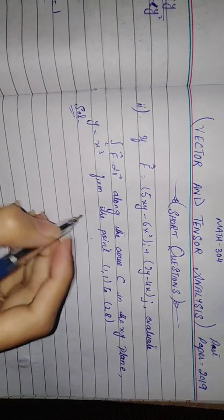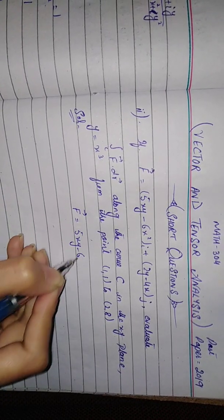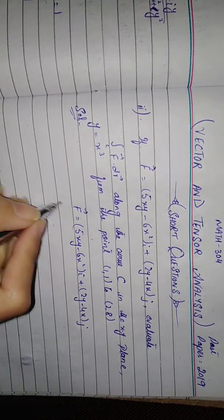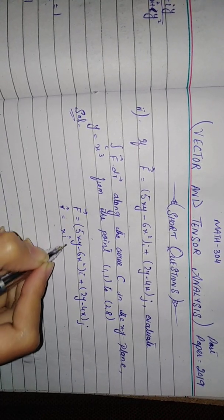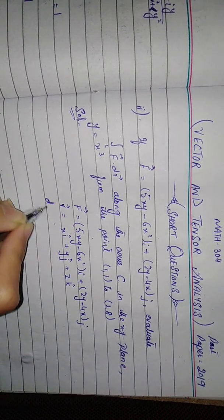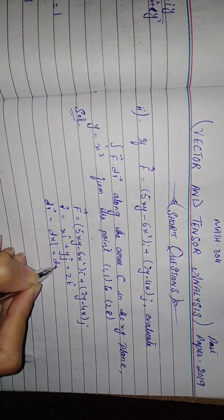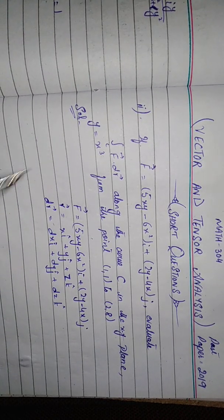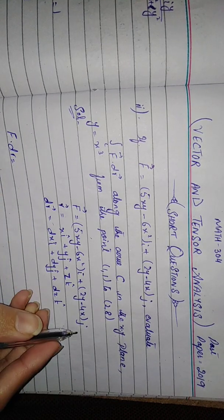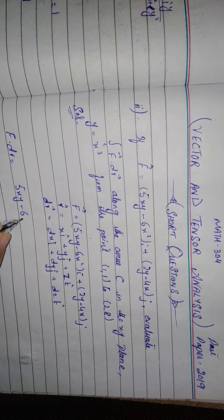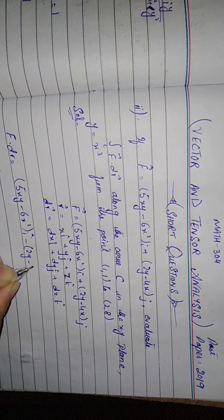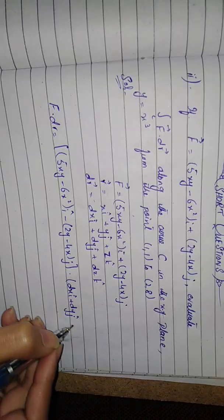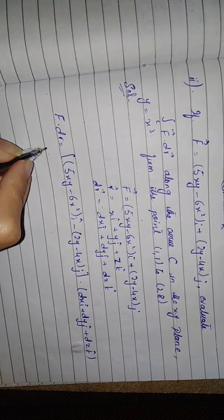We have given f equals xy minus 6x squared i plus 2y minus 4x j. We know that our position vector is x i plus y j plus z k. If we take the derivative, we have dx i plus dy j plus dz k. Now, we will find f dot dr integral.